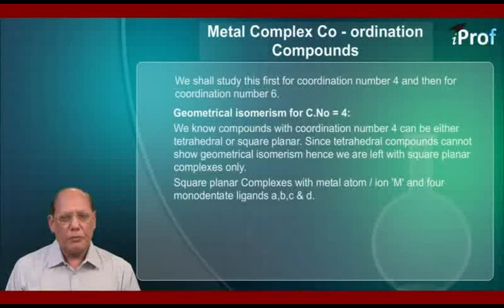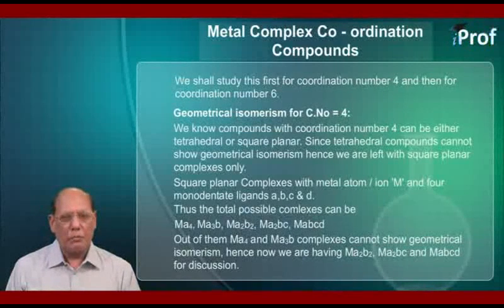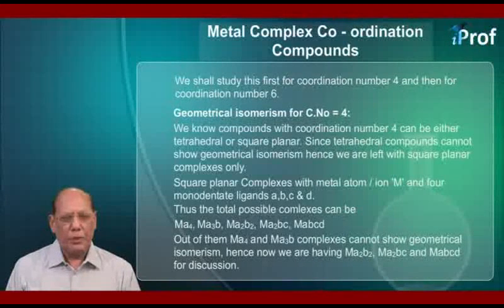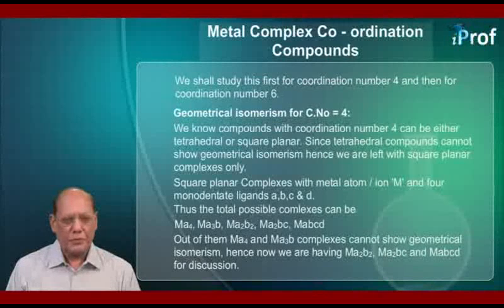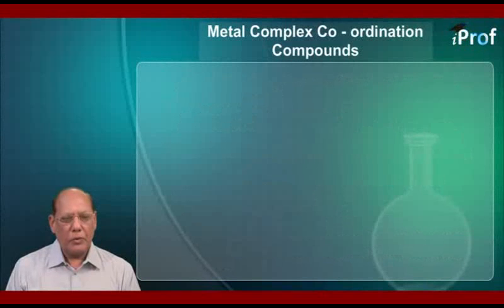Square planar complexes with metal atom or ion M and four monodentate ligands A, B, C, and D give the following total possible complexes: MA4, MA3B, MA2B2, MA2BC, and MABCD. Out of them, MA2BC, MA2BC, and MABCD are selected for discussion. Let us begin our discussion with MA2B2.